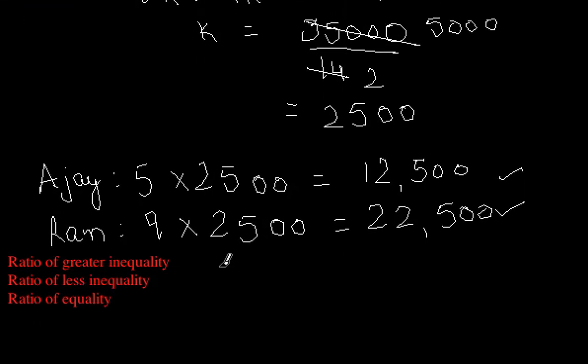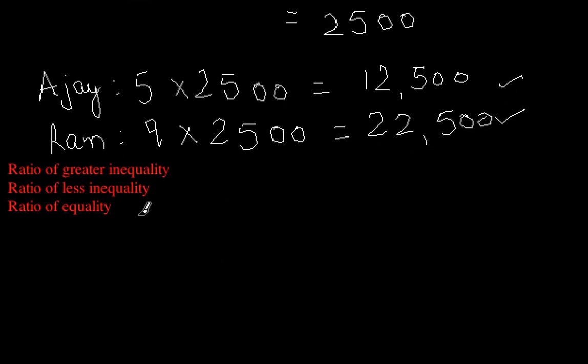Now another concept from the ratio topic is there are three types of ratios: ratio of greater inequality, ratio of less inequality, and ratio of equality. So the ratio of equality is always equal to 1 is to 1. This is the ratio of equality. Now the ratio of less inequality is less than 1, and ratio of greater inequality is greater than 1.